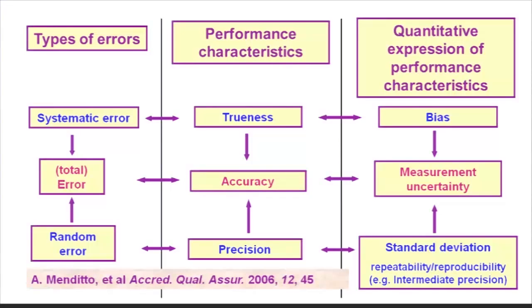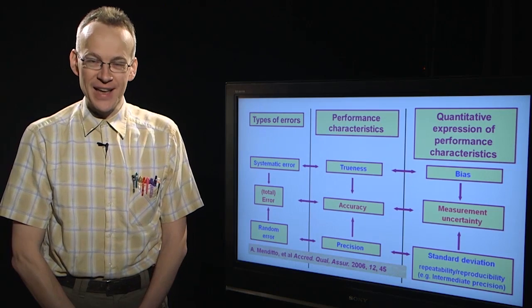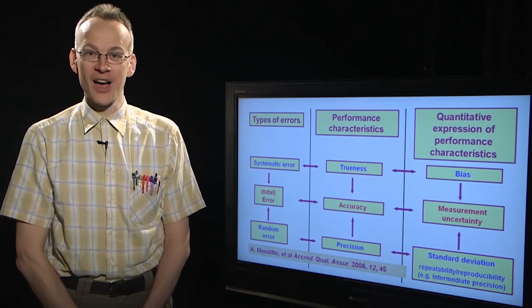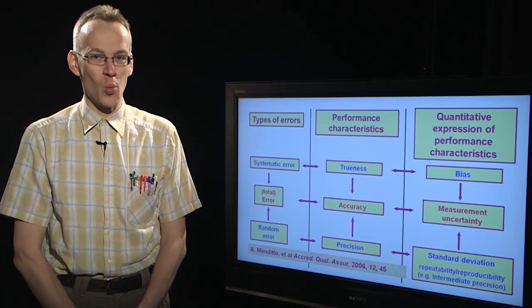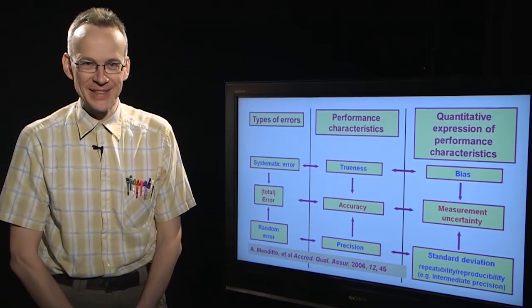These two types of errors sum up into the so-called total error, or simply error. Errors as well as true values of quantities are abstract concepts, so we cannot experimentally determine them.